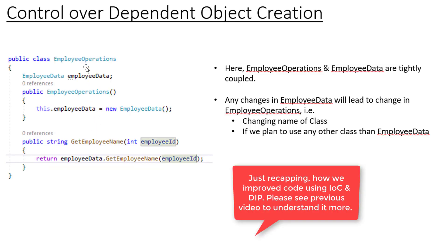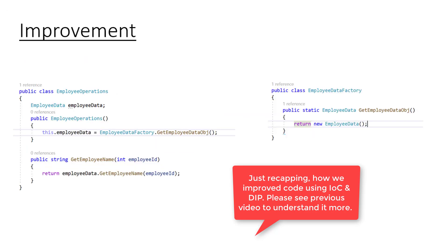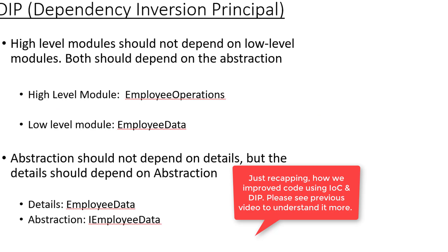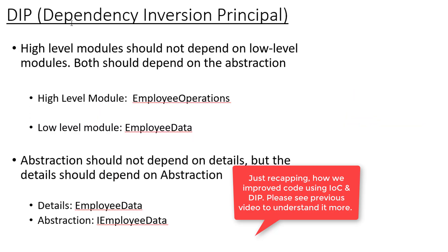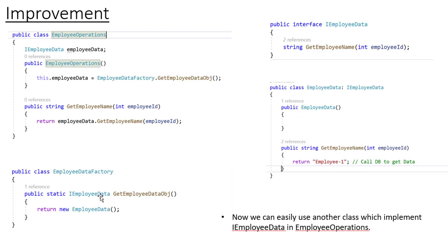In the previous video we discussed that we have an EmployeeOperation class which is dependent on EmployeeData. First, using the IOC principle, we improved the code — rather than creating an object directly, we create the object in a factory class and get the object from there, inverting the control. Then we discussed how the DIP principle says that high-level modules should not depend on low-level modules, so we returned IEmployeeData (the abstraction) instead of EmployeeData.